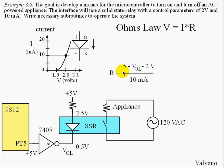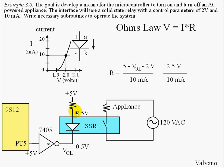Using Ohm's Law, the resistance is selected such that (5 minus VOL minus 2) — 2 being the diode voltage — divided by the diode current of 10 milliamps. We simplify this and see that 2.5 volts will go across the resistor and we want 10 milliamps to flow, so we'll use a resistor of 240 ohms and place it here.